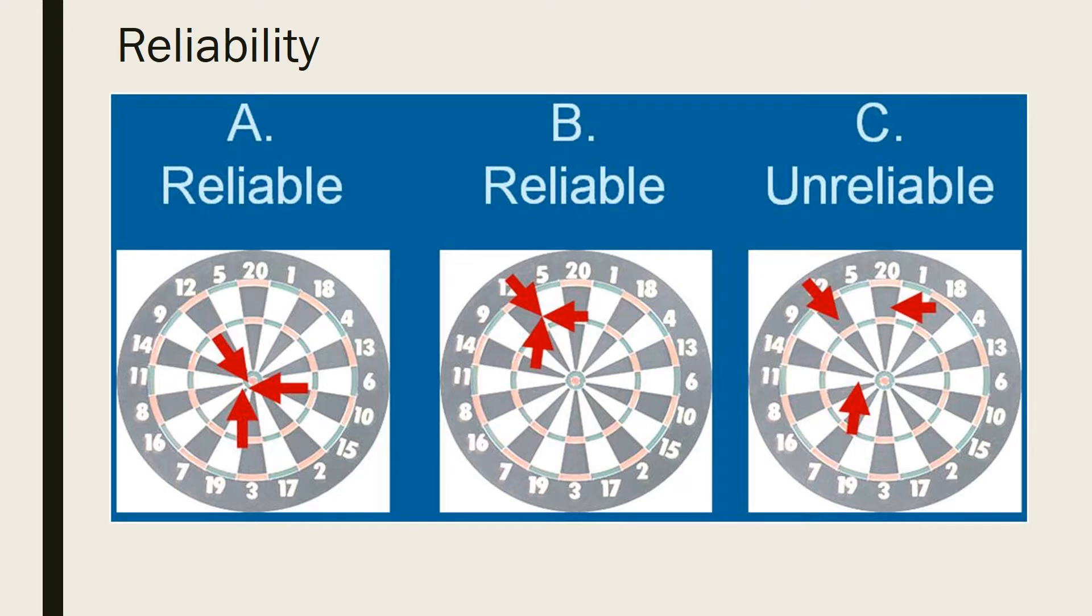Factors that can influence reliability include the testing conditions, how the test is administered and its objectivity. A test is objective if it yields the same score no matter who checks it or even if it is checked at different times.